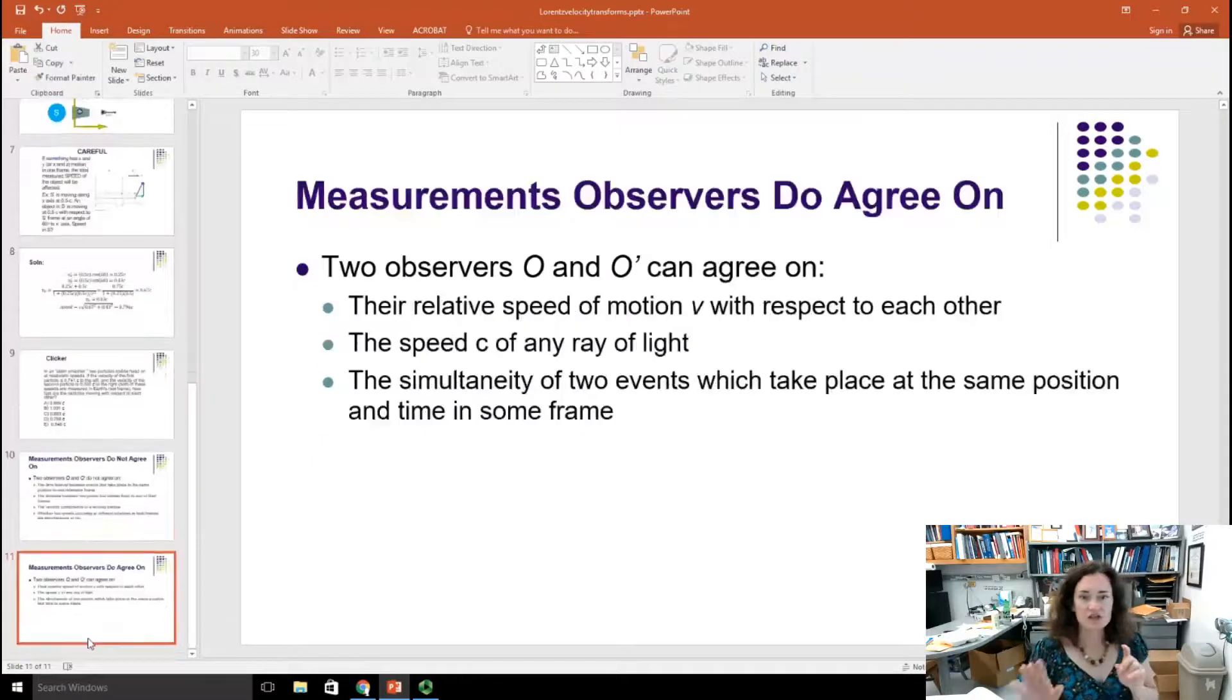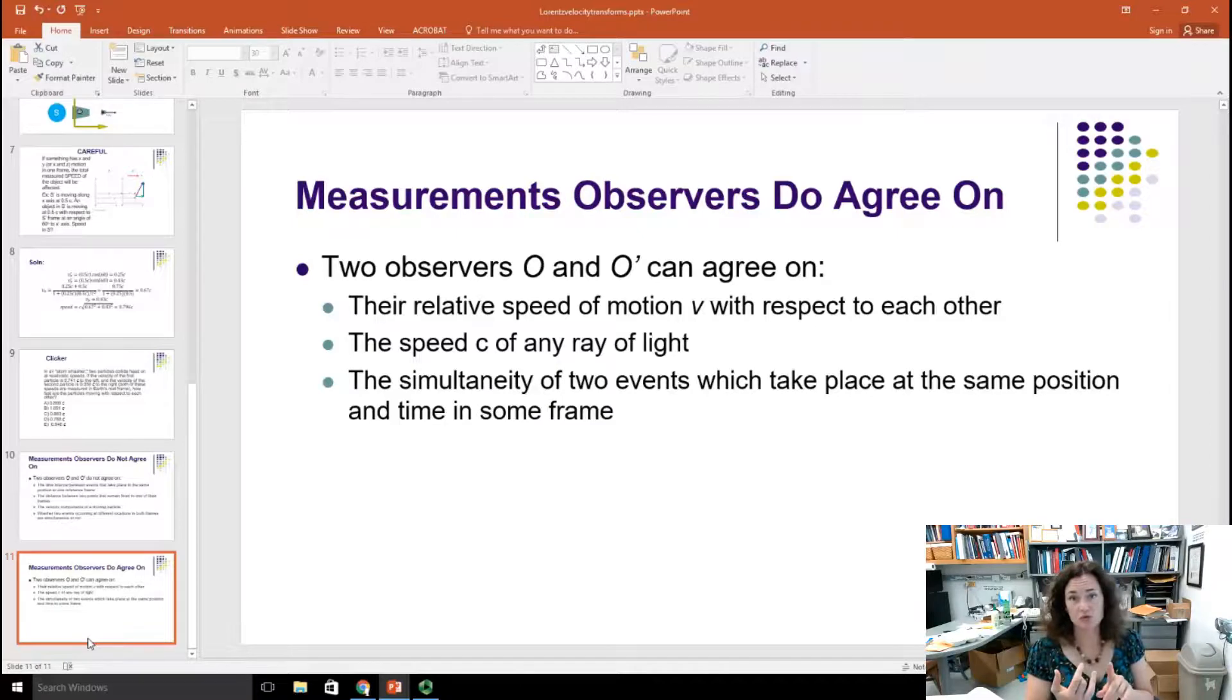Here's things that they do agree on, though. O and O prime can agree on their relative speed of motion with respect to each other, the speed of light, and the simultaneity of two events that take place at the same place and the same time. If they take place at the same place and the same time, then they'll still do that in another frame. That sums it up. I hope you enjoyed that, and I'll see you in class.